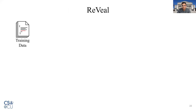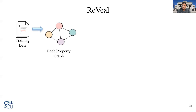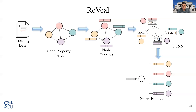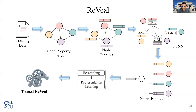With these lessons, we designed Reveal, a graph-based vulnerability detection tool. Given the training data containing vulnerable and non-vulnerable code, we first construct the code property graph, which is a graph that contains all structural relationships between code components. From the code property graph, we extract initial node features for every node. Then we use a graph neural network to learn node features from the graph structure. Once the node features are learned, we aggregate those into graph-level features. Given a collection of such graph-level features, we do resampling to reduce imbalance bias and do representation learning to train our tool, Reveal.